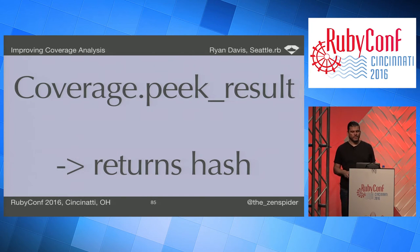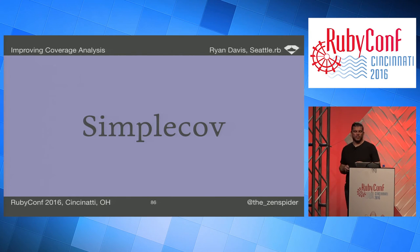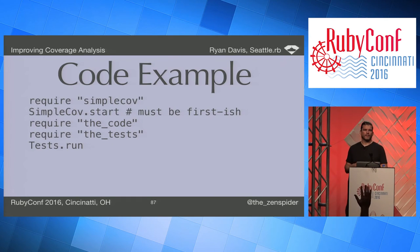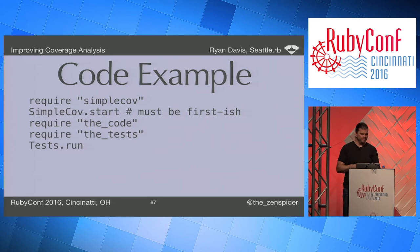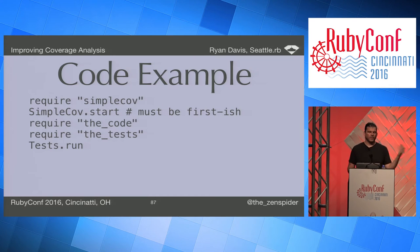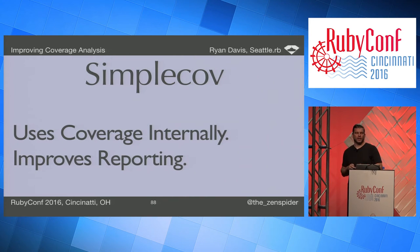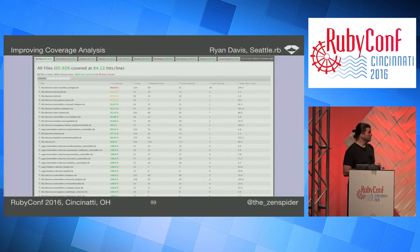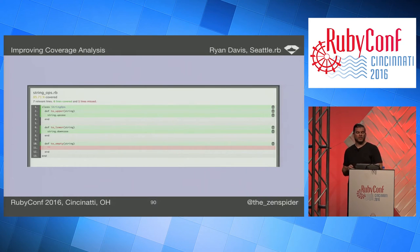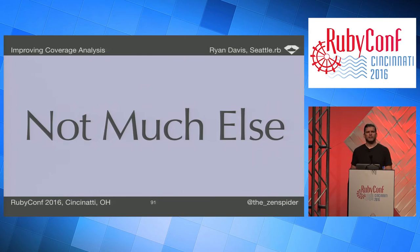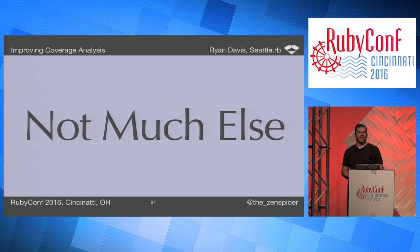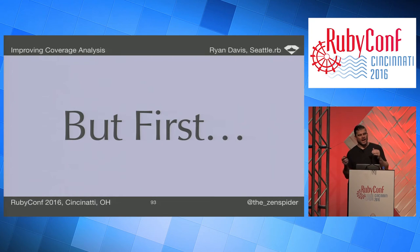There's also `coverage.peek_result`, which returns a copy and lets you continue — but the data stays the same, which is still problematic. SimpleCov is a tool many people know — and as someone joked, if you know it, you're all doomed. Its usage is equivalent: require it, start it, require your code and tests, run them, and you're done. It uses `coverage` internally but dramatically improves the output — a nice overview with sortable columns and per-class detail pages coloring the coverage.